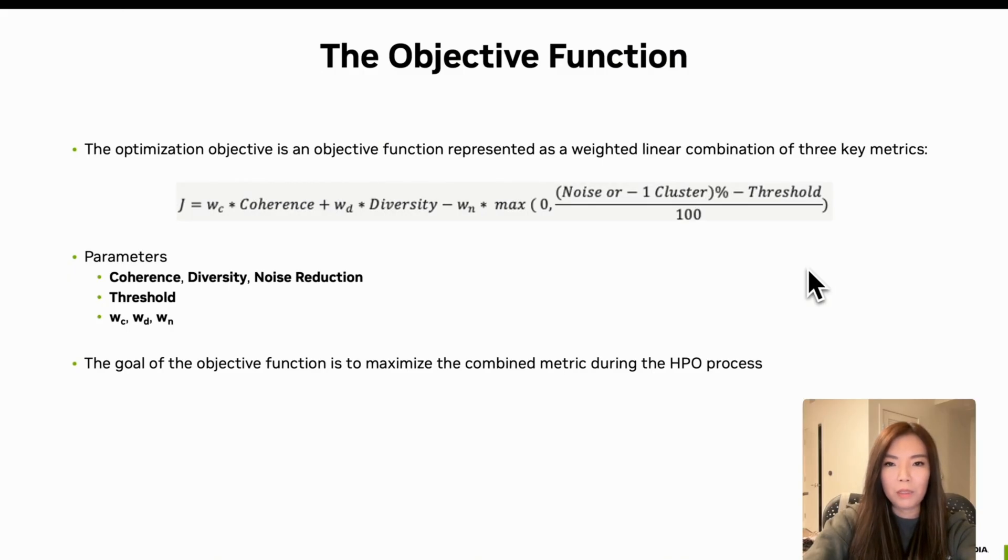If you don't explicitly control the weights for coherence, diversity, and noise, the model cannot effectively prioritize the balance between topic quality, coverage, and data retention. Our approach optimizes this function by minimizing the percentage of data clustered as noise, while simultaneously maintaining high coherence and diversity. We achieve this through Hyperparameter Optimization, which searches for the configurations that maximize the following function.